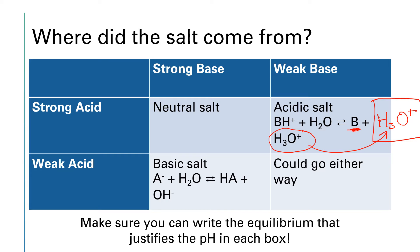A weak acid reacting with a strong base — the lower left corner of this table — is going to give us a basic salt. Because that weak acid, once it has reacted with the base, forms this A⁻ ion. That conjugate base is so weak it doesn't want to be in that form; it wants to go back to being the acid in its associated form. So it steals a proton from a water molecule to give us HA plus OH⁻. The presence of that hydroxide ion makes this salt basic. Dissolve that salt in water, it produces hydroxide ions, and pH paper or a pH meter will read basic.